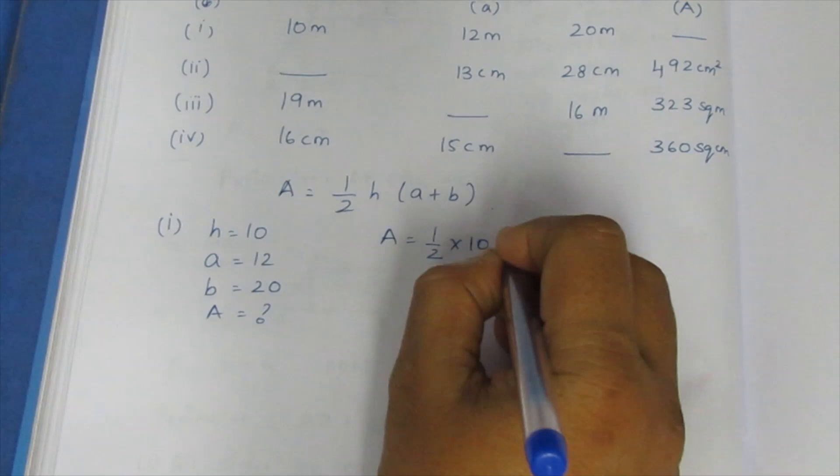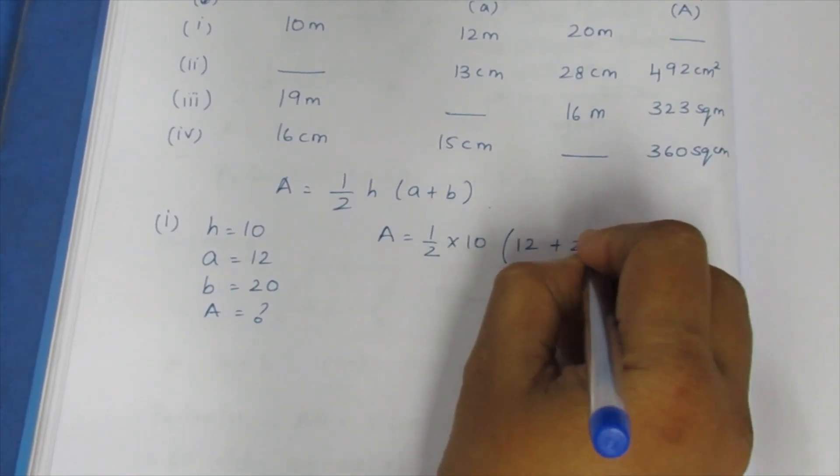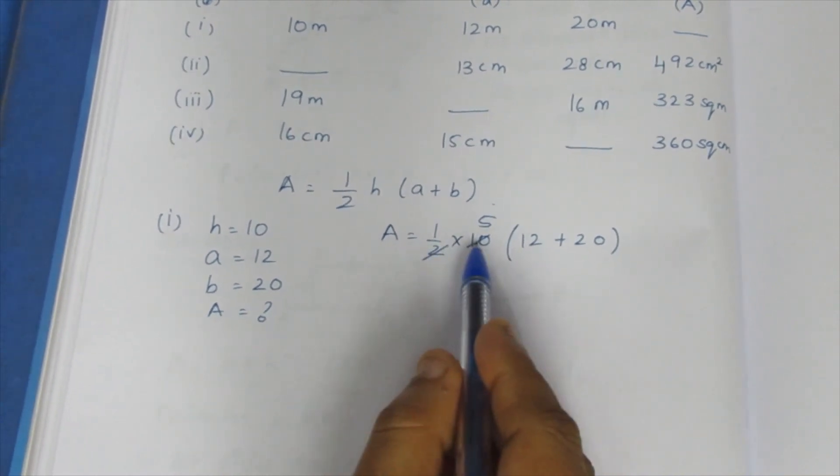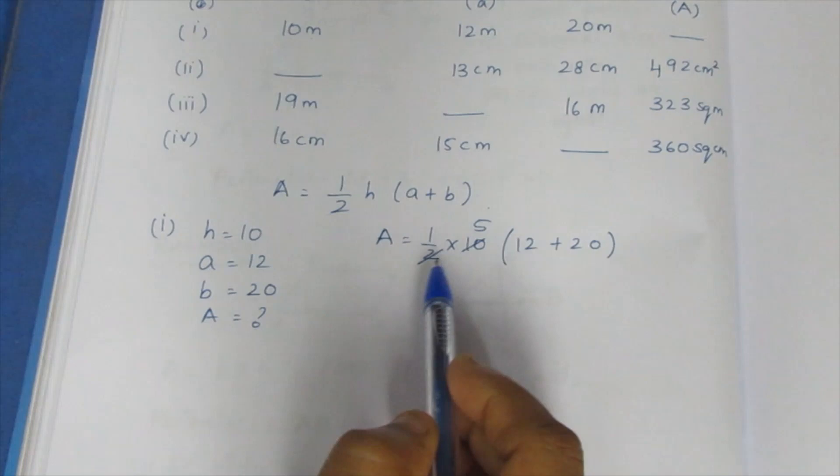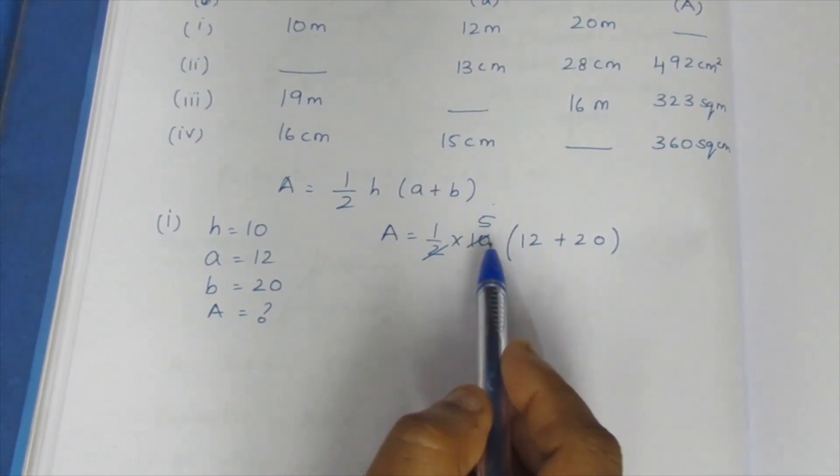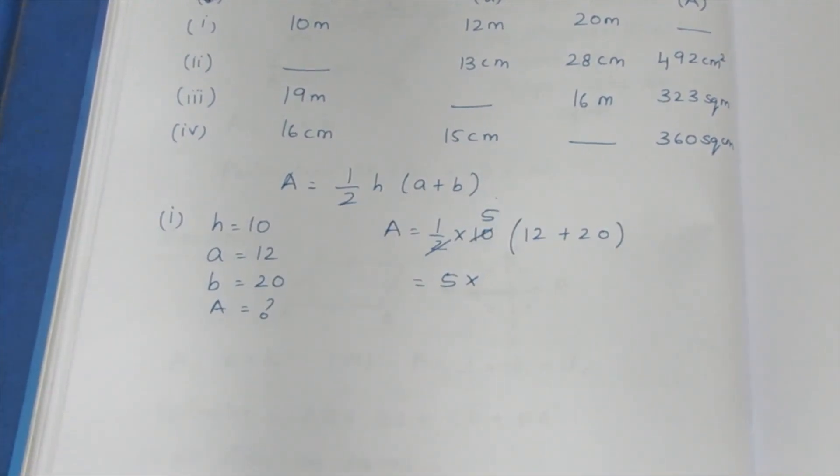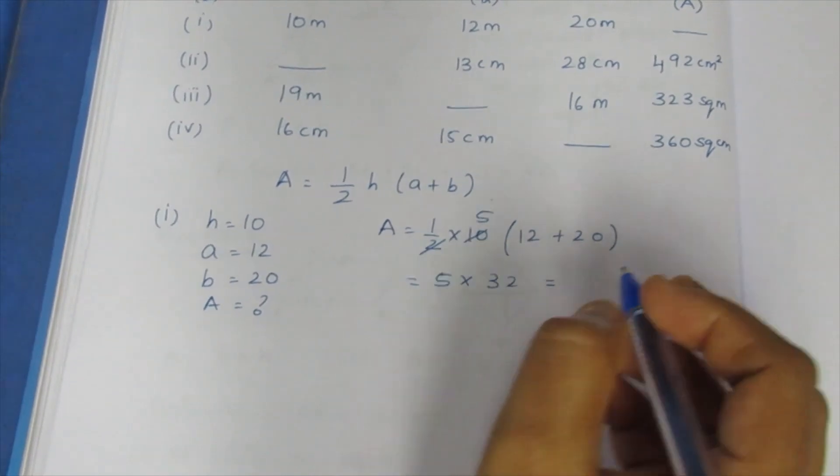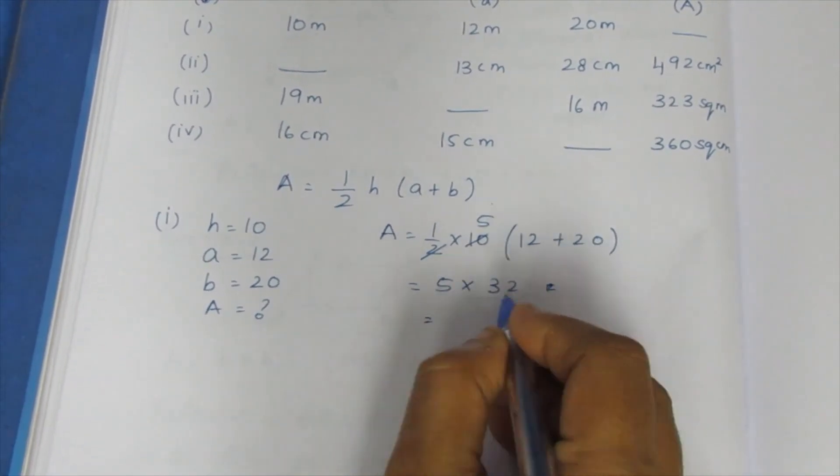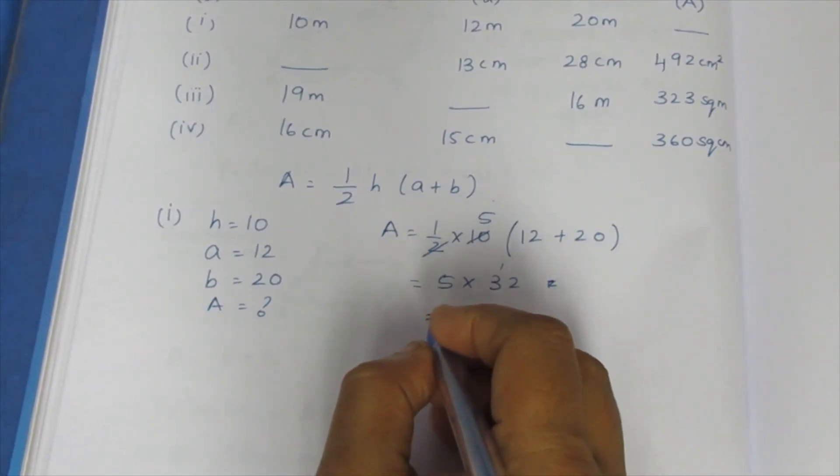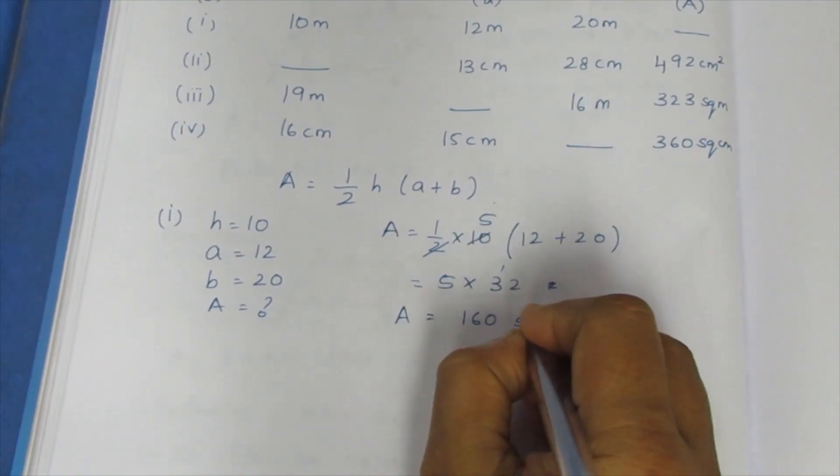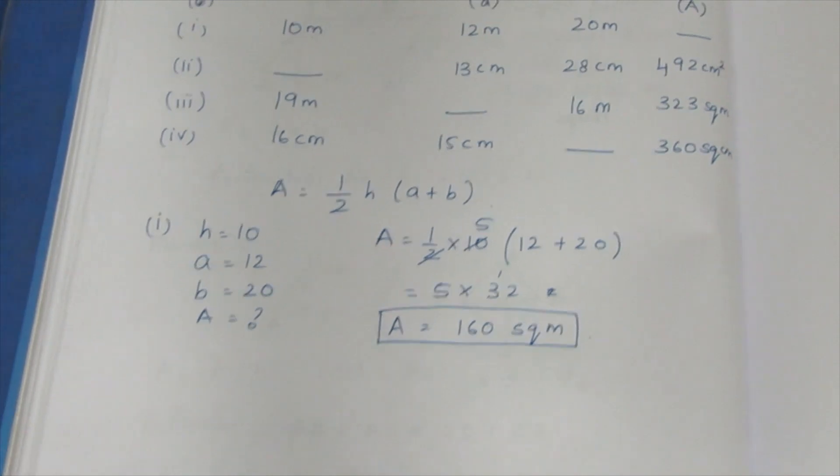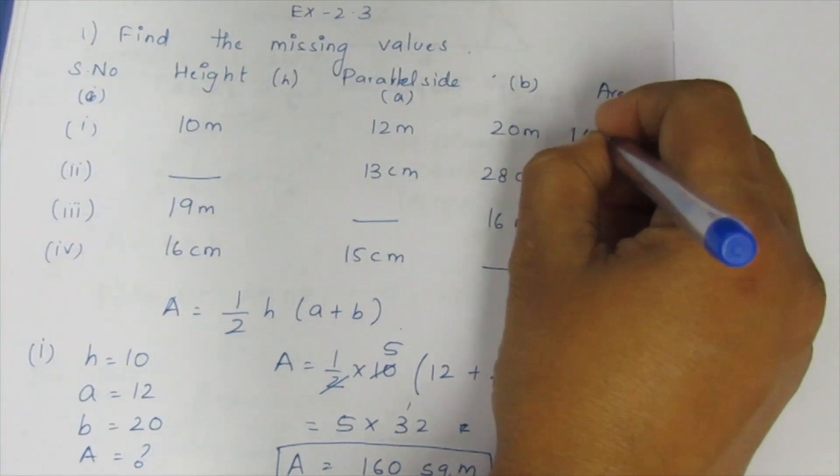Area equals 1 by 2 times H times A plus B. One by two times ten times twelve plus twenty equals five times thirty-two equals one hundred sixty. This is the first sum answer. So 160 square meter is the area. First fill it in the table.